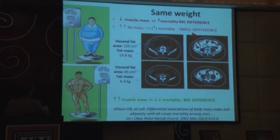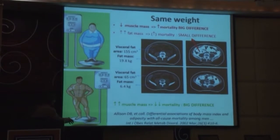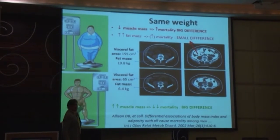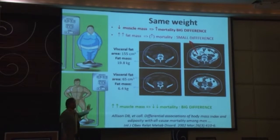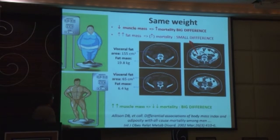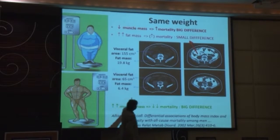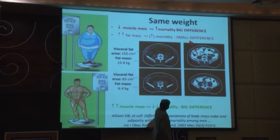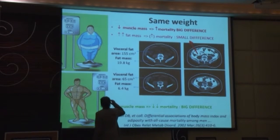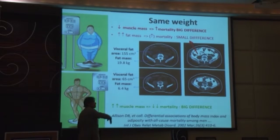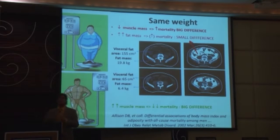You could have two people with the same weight where one has almost no abdominal obesity and no excessive visceral fat, and that person has very low mortality — as seen on a typical CT scan of the abdomen showing much less fat. The other person with the same weight but a fatty, loose body has a much bigger problem because of significant abdominal obesity with visceral fat.